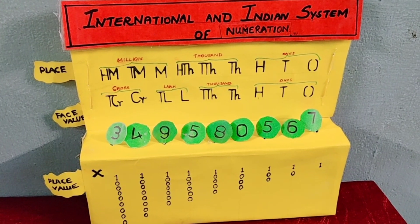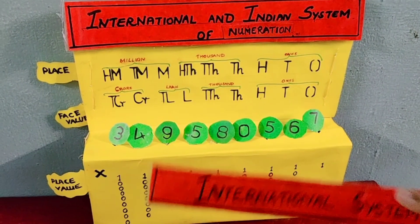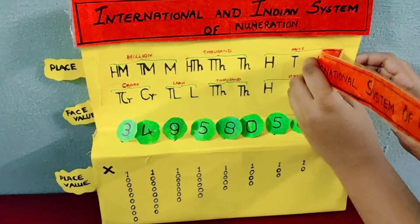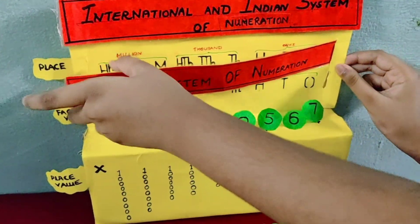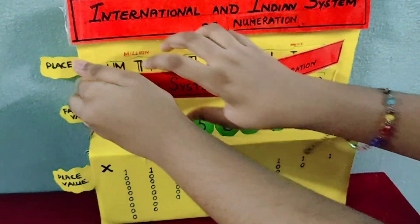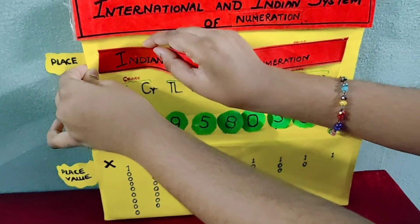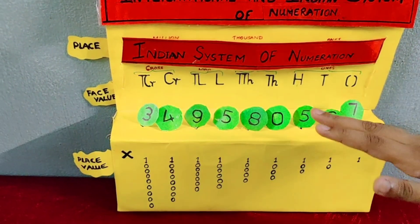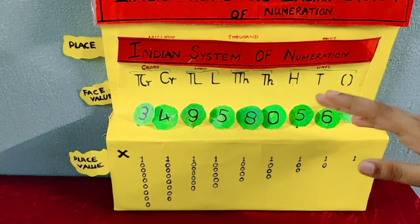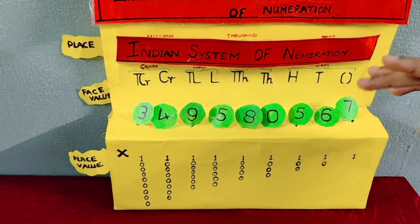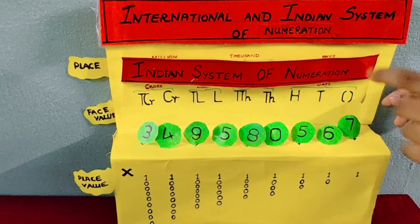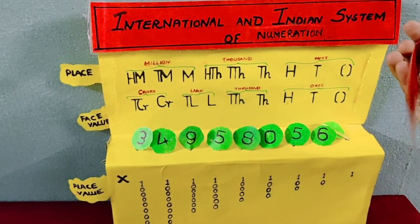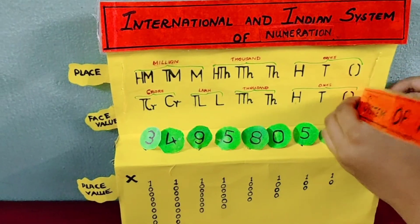If you want to explain the Indian system of numeration, you have to keep it like this. If you want to explain the international system of numeration, you have to flip and keep it like this.